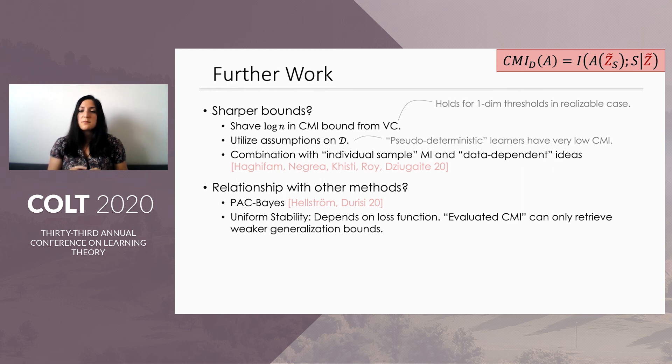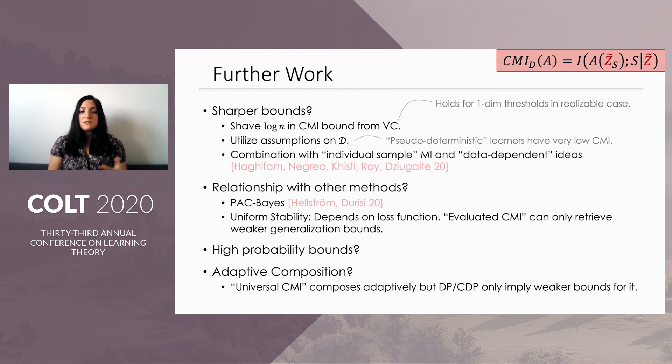And what we'd really like to incorporate into our framework is uniform stability. Uniform stability is a very well-developed theory that entails stronger generalization bounds, but it seems incompatible with CMI because it depends on the loss function when CMI does not. Nonetheless, we connect the two by an extension of CMI, which we call evaluated CMI, but we can only retrieve slightly weaker generalization bounds going through CMI. Another important direction would be to get high probability bounds. CMI as an average notion only gets us bounds that depend polynomially on the inverse of the failure probability and not exponentially as the high probability bounds require. And lastly, can we get a variant of CMI that composes adaptively? We do propose another extension, which we call universal CMI, and it's a stronger notion than CMI. And it composes adaptively, but differential privacy implies slightly weaker bounds for this notion. So further work would be needed on this front.